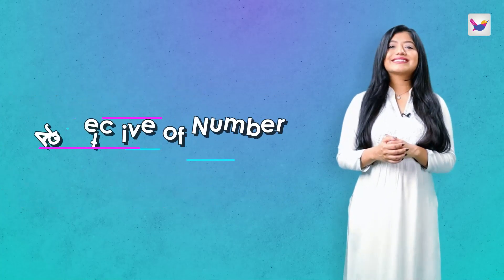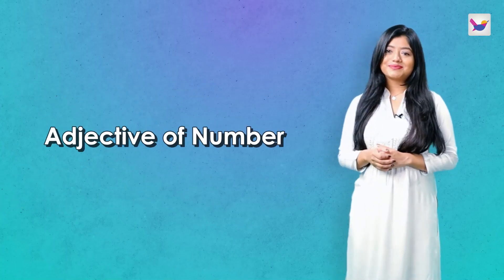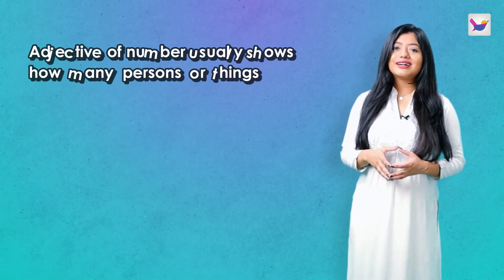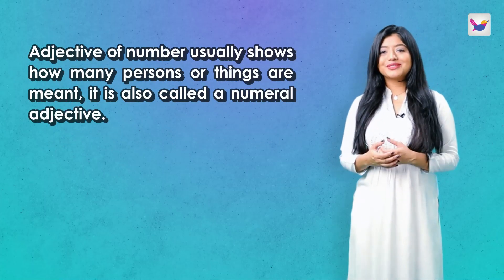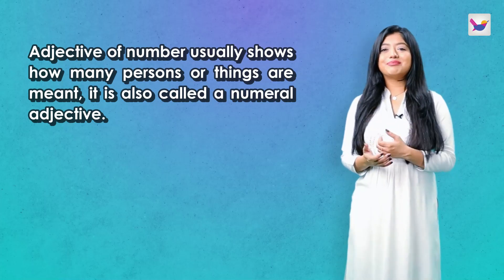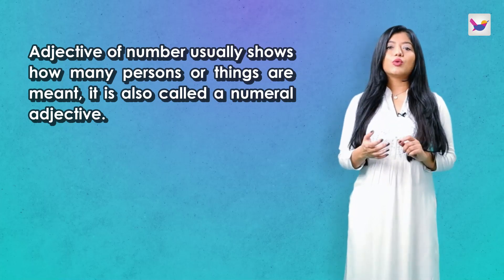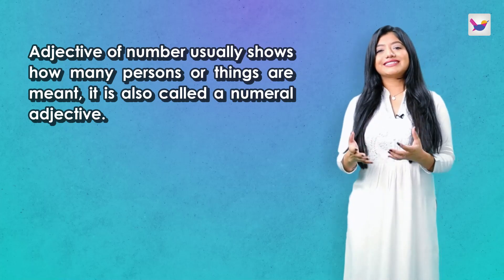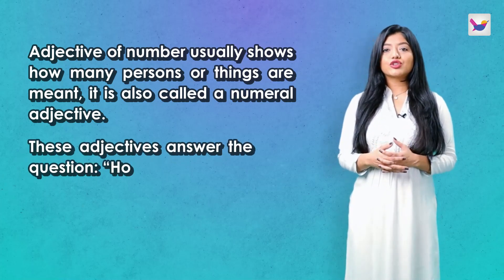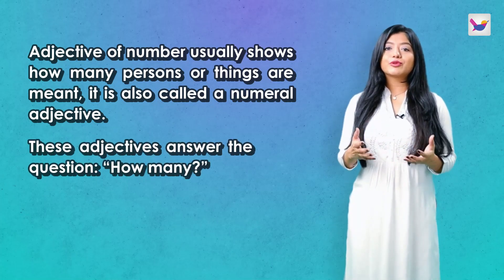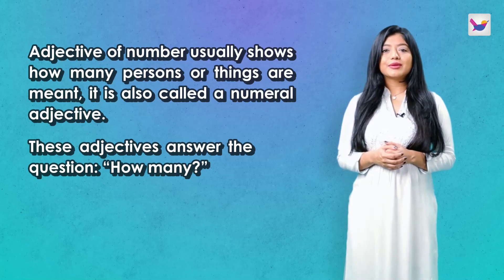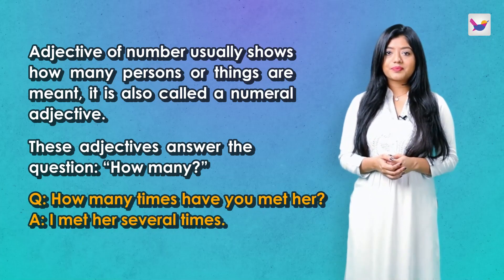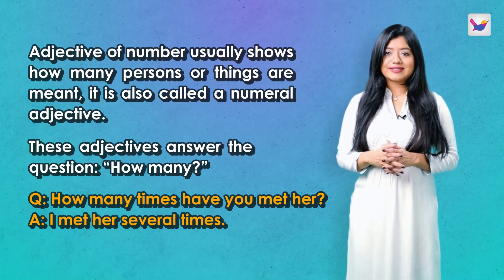Next is the Adjective of Number. The adjective that shows the number, order, or sequence of a noun, we call it Adjective of Number. Such as one, first, triple, several, etc. This usually answers the question 'how many.' For example: how many times have you met her? I met her several times.